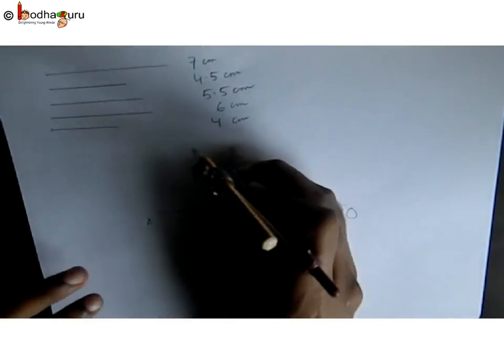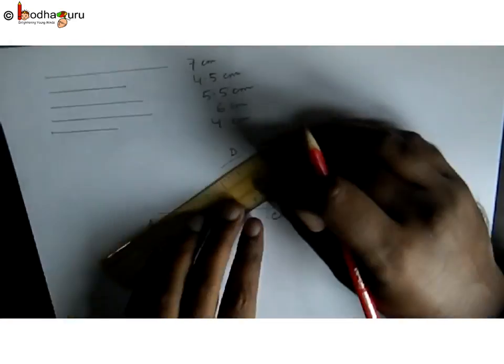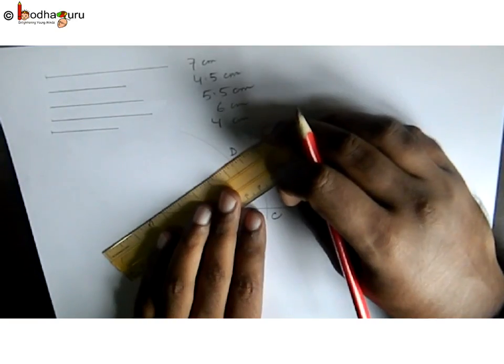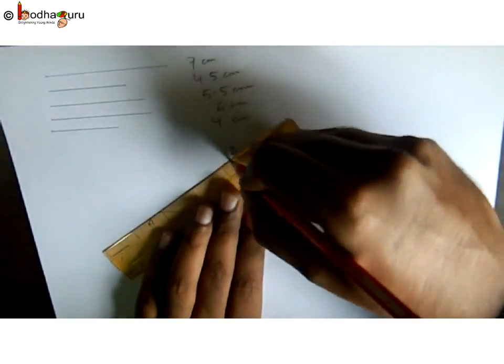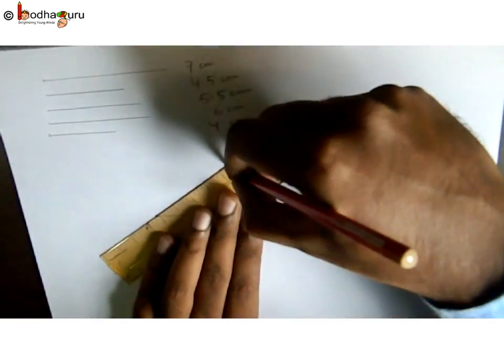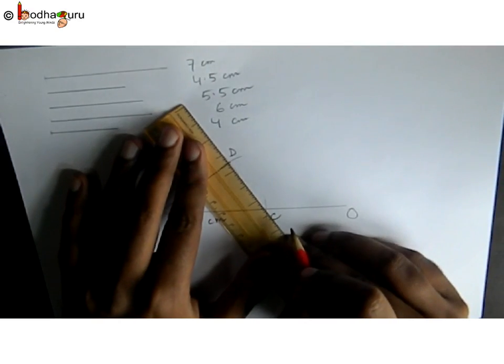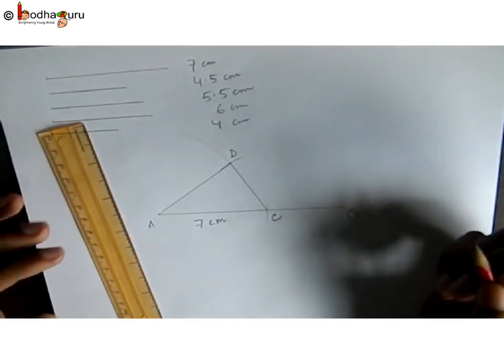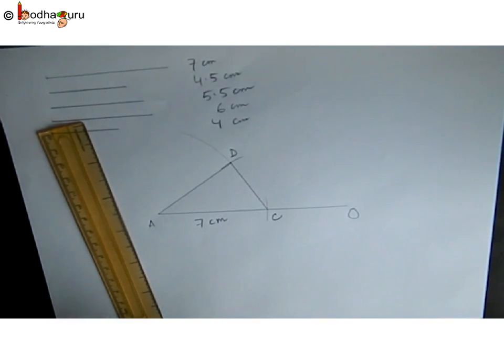Now we can join A and D and C and D. Remember why we took AD and CD, because they both are having A and C as the points and one common point, so that common point is this intersection point.